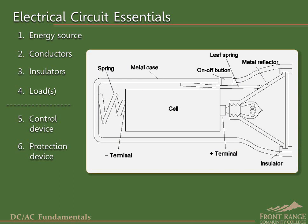The energy source in this circuit is a single cell or battery. The battery establishes a potential difference between its positive and negative terminals, which causes current to flow through the conductors. In this case, the conductors are not wires but metal parts of the structural system. For example, the metal spring is in contact with the negative terminal of the battery on one end and the metal case on the other, creating a conductive path through the metal structure, which includes the metal leaf spring in the switch and the metal reflector that holds the bulb.